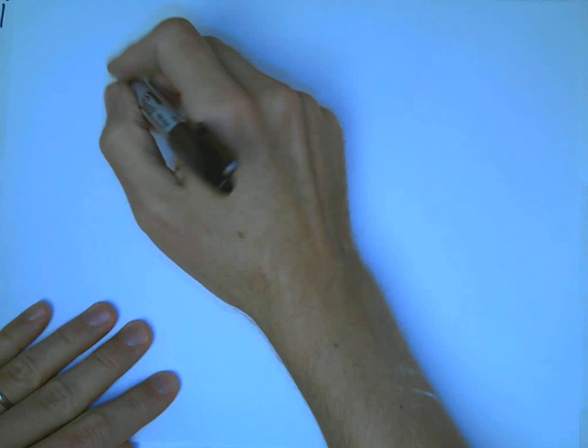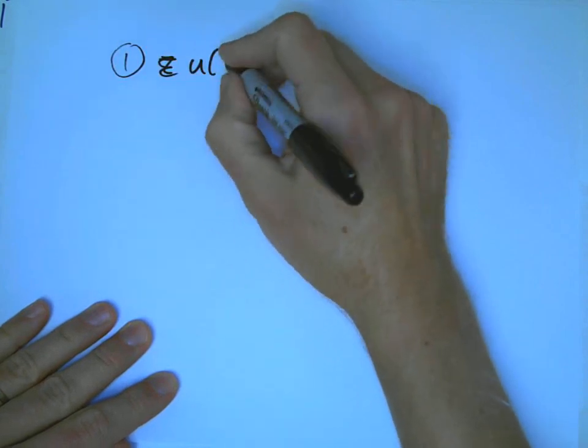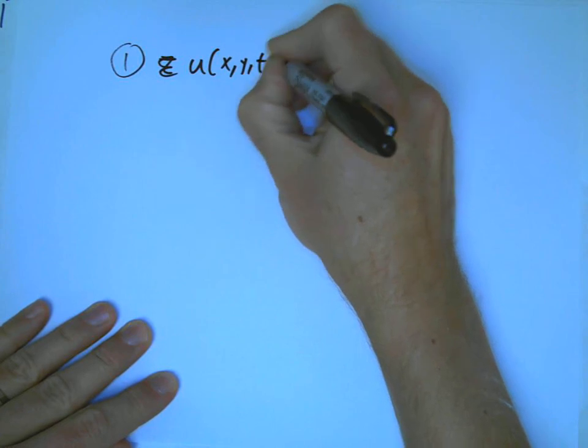Once again, I'm going to do a very hand-wavy derivation. I'm going to look at some examples, and they're going to be some of our favorite examples of quadrics. So we've got u of x, y, and t.